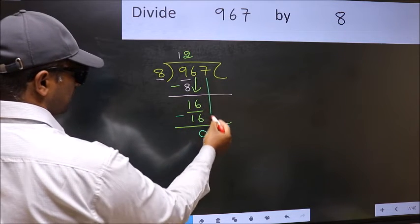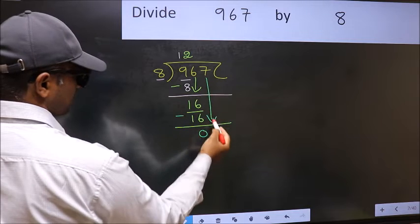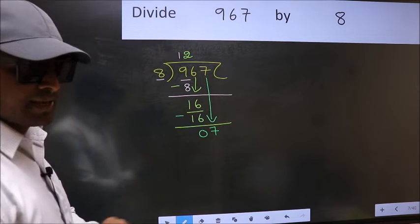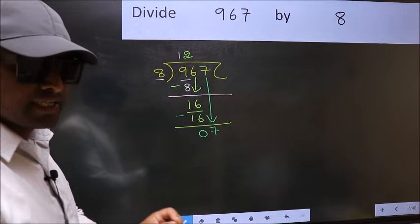After this, bring down the beside number. So 7 down. After this step, the mistake happens. And the mistake is this.